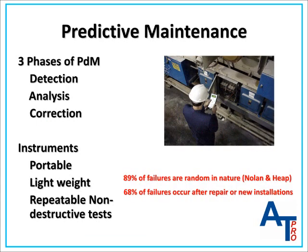Predictive maintenance programs are based on studies, like the Nolan and Heap study, that have determined that 89% of failures are random in nature and that 68% of failures occur immediately after installation or repair. Generally speaking, this means that the probability of a failure actually increases by performing routine preventive maintenance tasks and inspections.